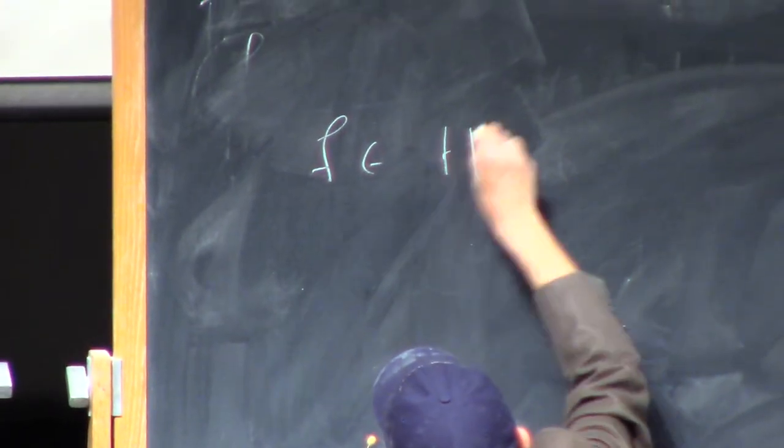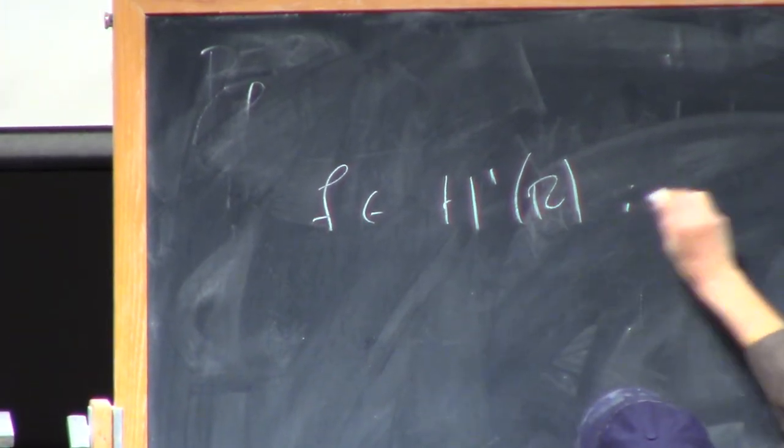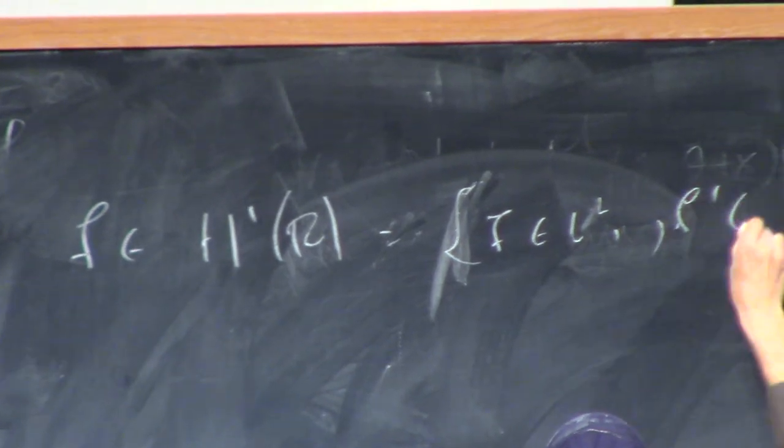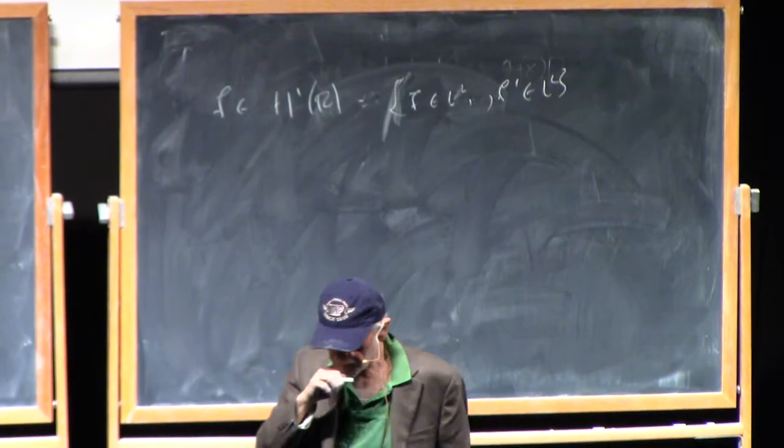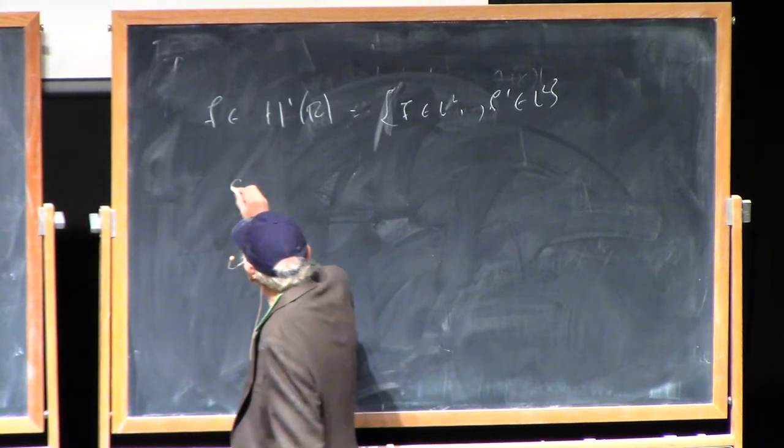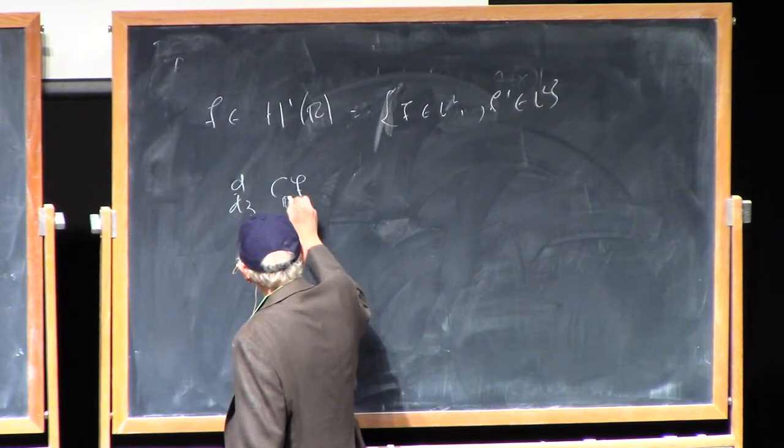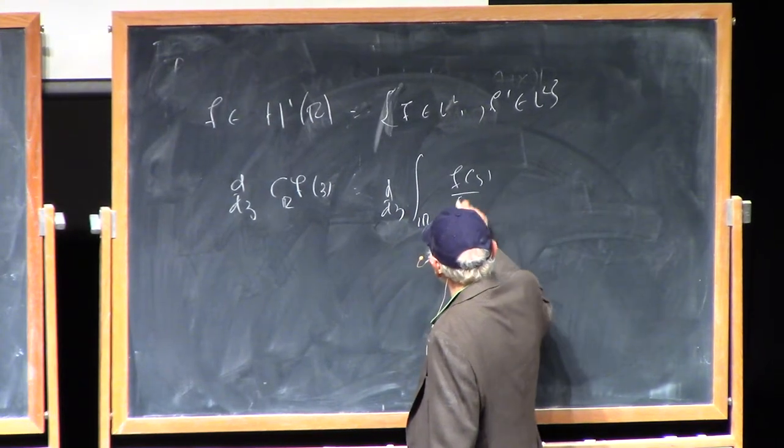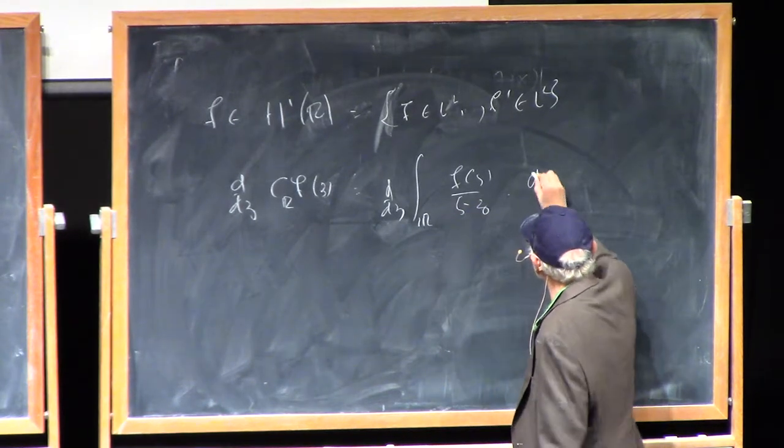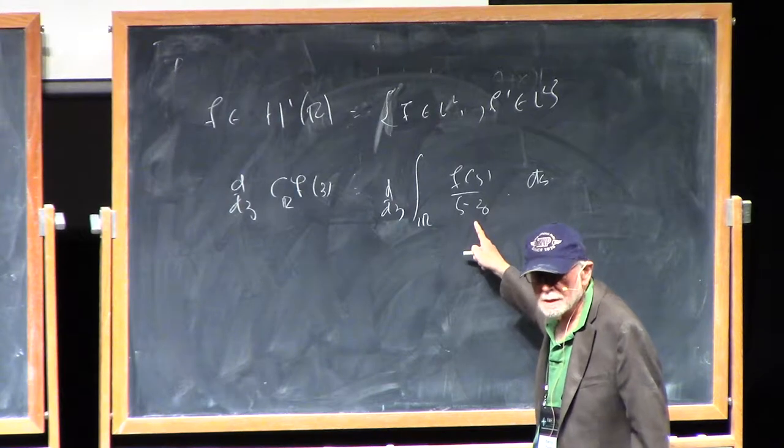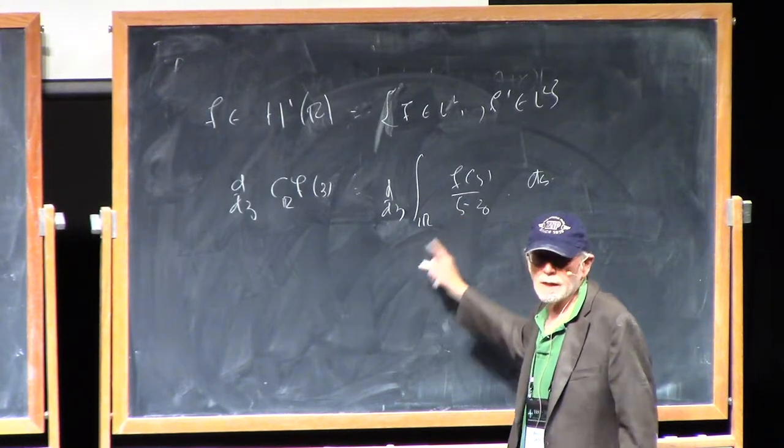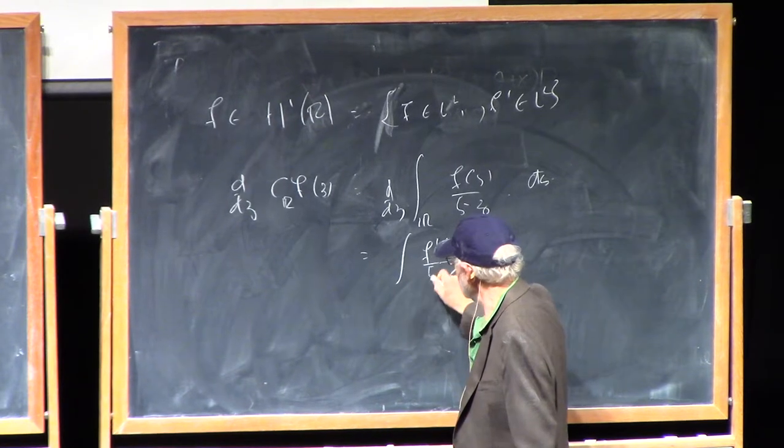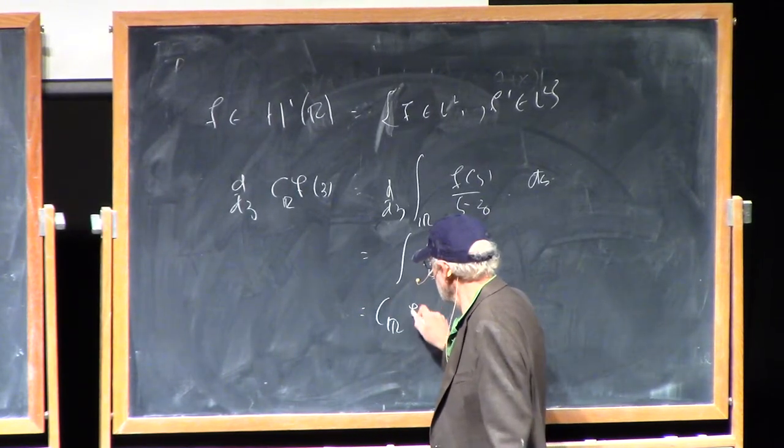So observe the following. Suppose f belongs to H1 of the real line. So that is f in L2, f prime in L2. Now this is the distributional derivative of f. And suppose I take the derivative d by dz of c_r of f of z. So it's d by dz integral over r, f of s upon s minus z ds. So I can put the derivative on the z. I can transfer it over to the s. I can integrate by parts. And this comes out to be f prime of s ds upon s minus z. So this is just c_r of f prime.